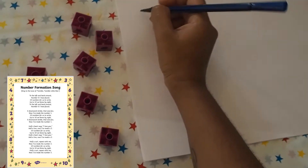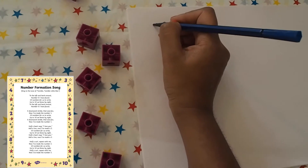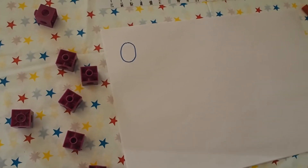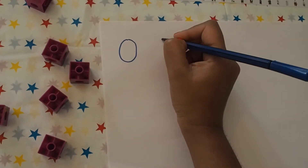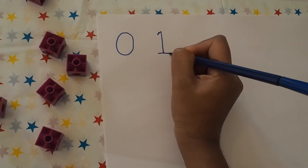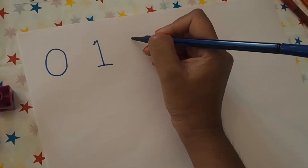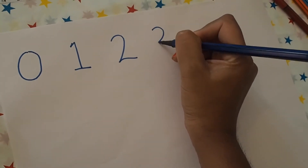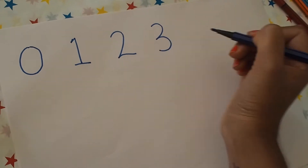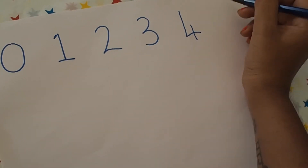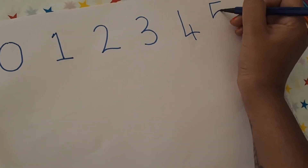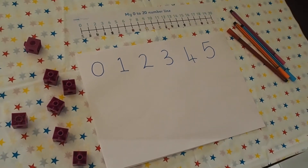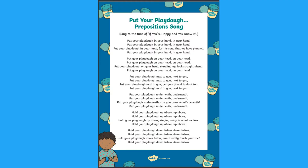To the left and back around, number zero I have found. Ten numbers for us to write, up to ten we know by sight. Work through all of the different numbers and sing the songs as children form all of the numbers.